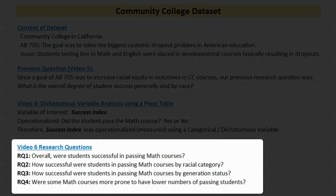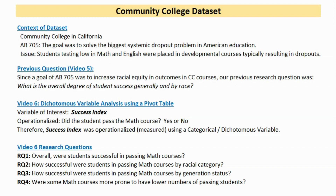In video 6 we're going to be looking at four individual research questions. The first is an overall question: were the students successful in passing math? Questions two and three look at two demographic variables — passing math by racial category, and then passing math courses by generation status. The fourth question changes our focus to look at all of the math courses to see if some were more prone to have lower numbers of passing students. Our focus is on math, which typically has had the highest failure rates in developmental courses.